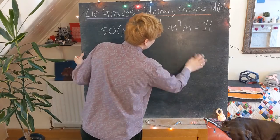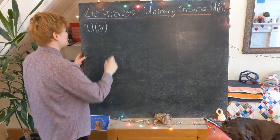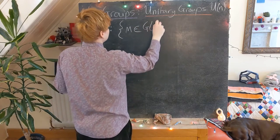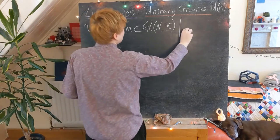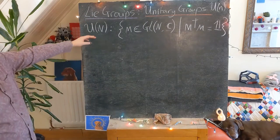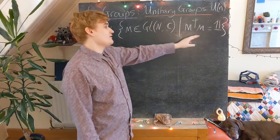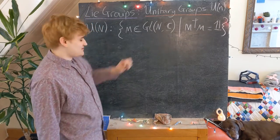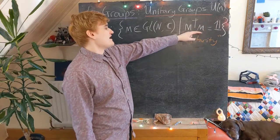We're going to do something very similar for our unitary groups. I'll give the general definition for any n-dimensional unitary group. We realise U(n) as the set of all matrices from GL(n,C) that satisfy the property that M dagger times M is equal to the identity. This defines the unitary group of dimension n, as the set of all matrices from GL(n,C) satisfying something analogous to the orthogonality property — we call it the unitarity property.